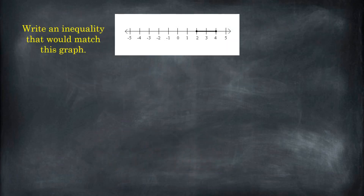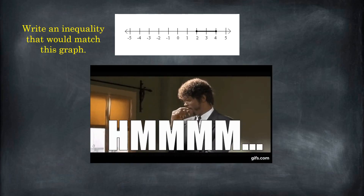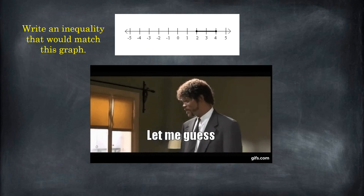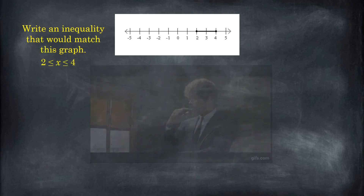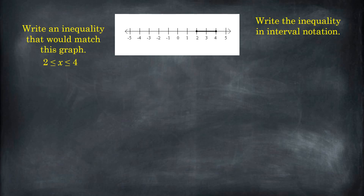Why don't you go ahead and try this? Write this graph as an inequality to make sure you've got it. Here, 2 and 4 have solid dots. That means they're both included, which means we have less than or equal to inequality symbols. So try now to write this in interval notation.